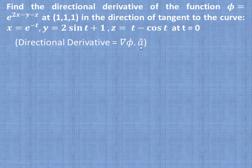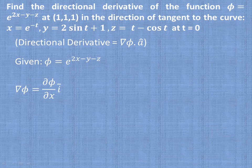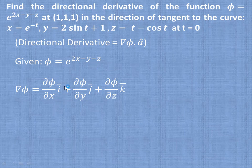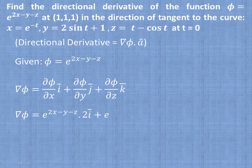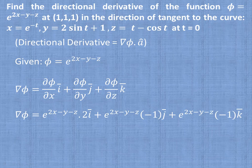Given point function φ = e^(2x - y - z), del φ equals (∂φ/∂x)î + (∂φ/∂y)ĵ + (∂φ/∂z)k̂. Differentiating with respect to each variable: del φ = e^(2x - y - z) · 2î + e^(2x - y - z) · (-1)ĵ + e^(2x - y - z) · (-1)k̂.